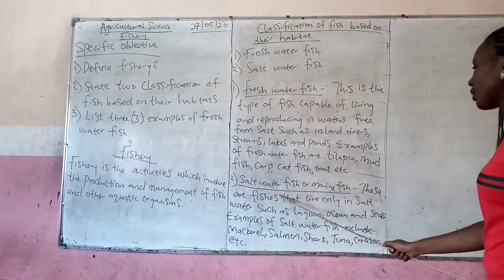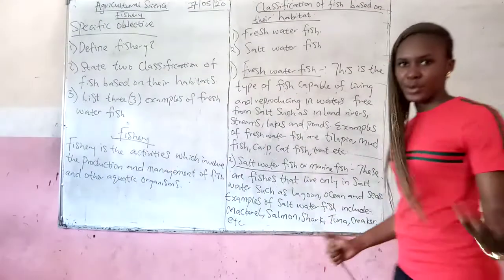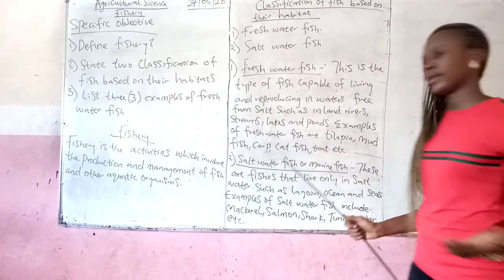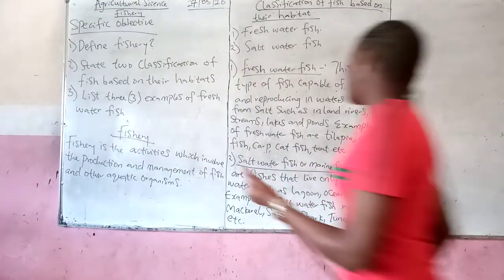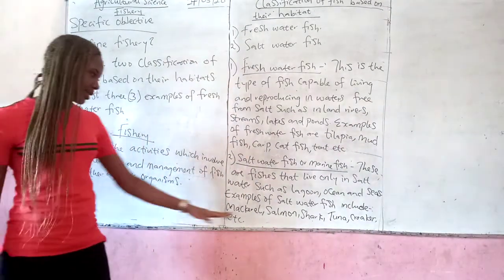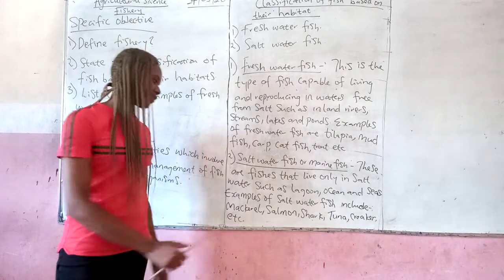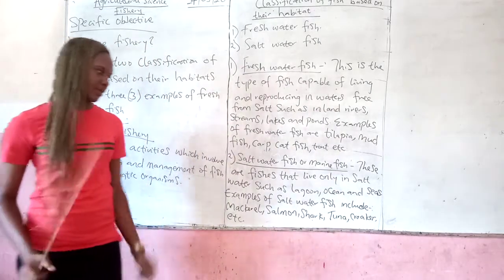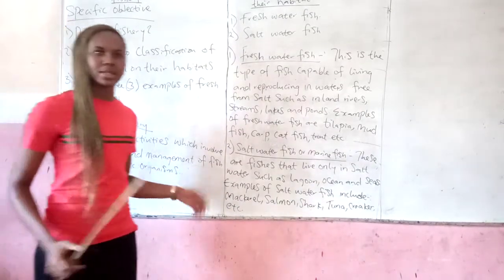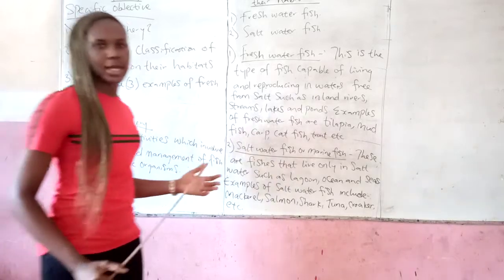We have saltwater fish, also called marine fish. This is a type of fish that lives very well in saltwater. This type of fish consists of the salmon, the shark, the tuna, the croaker, the mackerel, etc. Remember, this type of fish we see mainly in the ocean, seas, and other saltwater bodies.